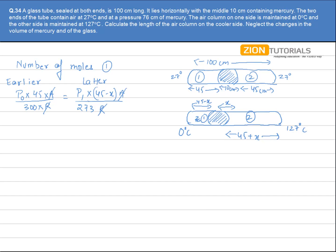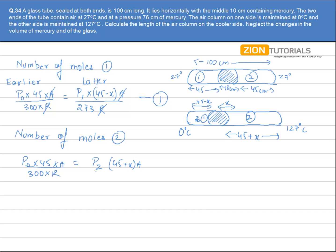For compartment two, the initial moles equal P-naught times 45 times A divided by 300R — same as compartment one, since pressure, volume, and temperature were all equal initially. Afterwards, this equals P2 times (45 plus x) times A divided by 400R. At equilibrium, mercury is stationary, so pressure must be equal on both sides: P1 equals P2.